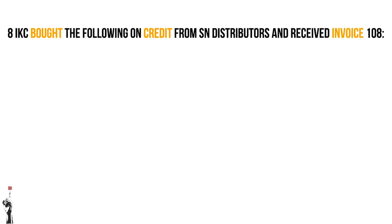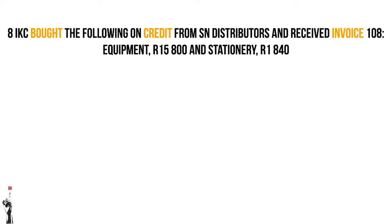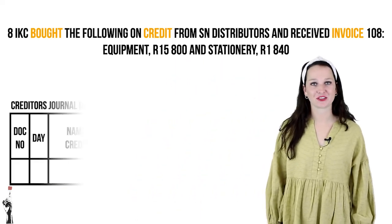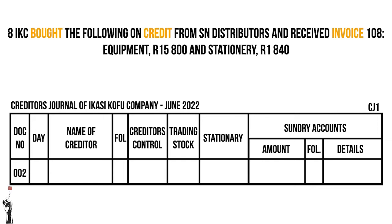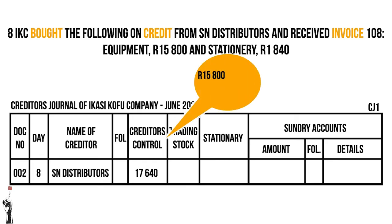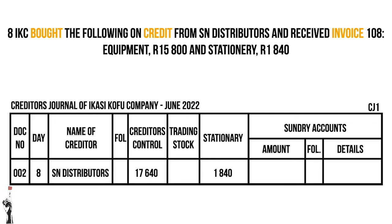Let's look at another example. Ikasi Coffee Company bought the following on credit from SN Distributors and received invoice 108: equipment for 15,800 rand and stationery for 1,840 rand. The invoice number will be 002 and the date is the 8th of June. The amount in the creditor's control column will be 15,800 plus 1,840, which equals 17,640 rand. The stationery will be recorded in its own column and the equipment will be recorded in the sundry accounts.